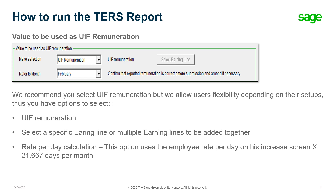For the value to be submitted as UIF remuneration, there are three options available. You can either select UIF remuneration, select a specific earning line or multiple earning lines to be added together, or you can select the rate per day calculation. This calculation uses the employee's rate per day on the increase screen, multiplied by the average number of days, which is 21.667. We do recommend that you select UIF remuneration.